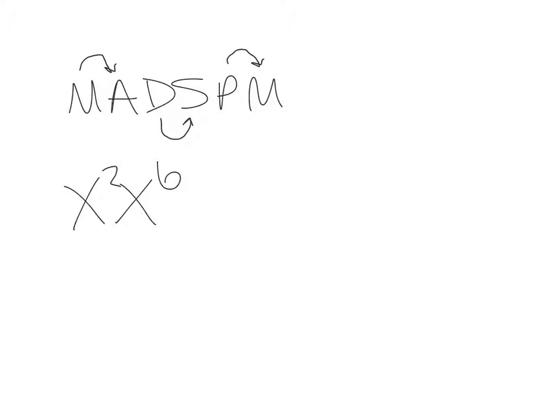Aka, x squared times x to the 6th power. If I'm multiplying the bases, add the exponents. So it should be equal to 6 plus 2, x to the 8th power. The bases always stay the same. And you can only combine bases that are the same.